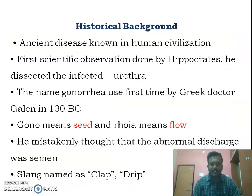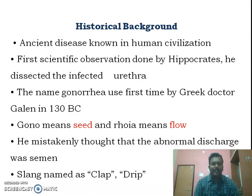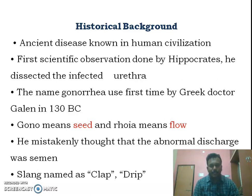Looking at the historical background of gonorrhea: gonorrhea is one of the ancient diseases known to mankind, and the first scientific observation on gonorrhea was made by the father of medicine, Hippocrates. In 130 BC, Galen named the disease as gonorrhea.